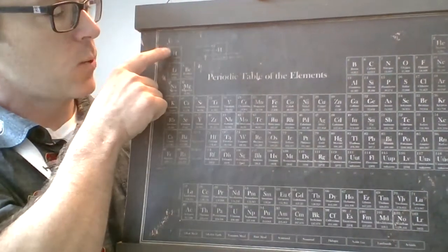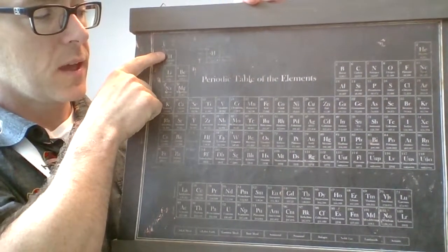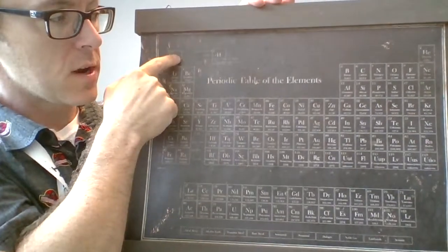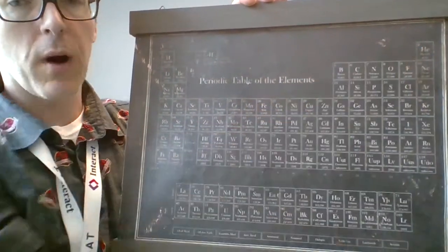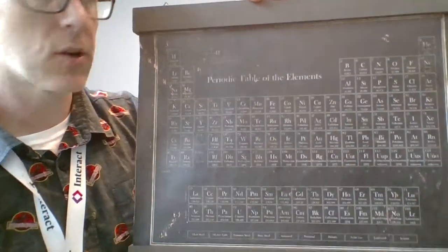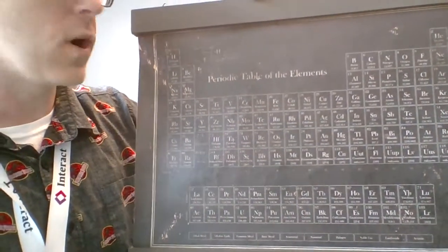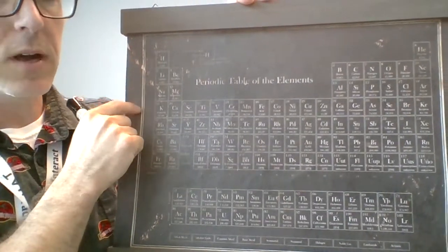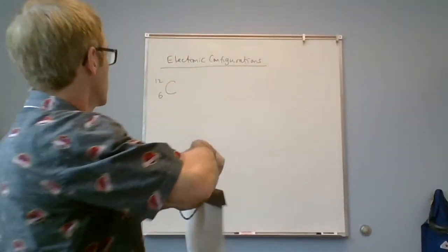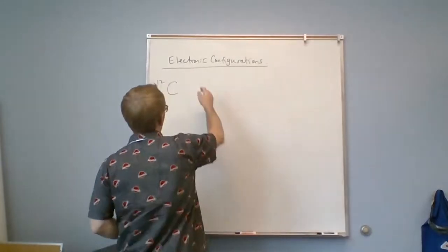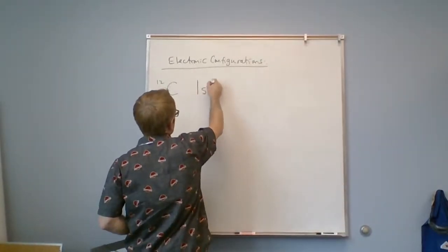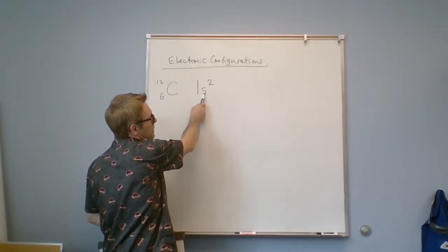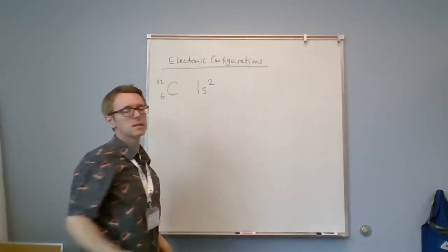We start off in line one and read right across. There are only two boxes in line one. Each box contains an electron, and we start in the s block. So that would be 1s², since we're in line one, in the s block, with two boxes in line one.